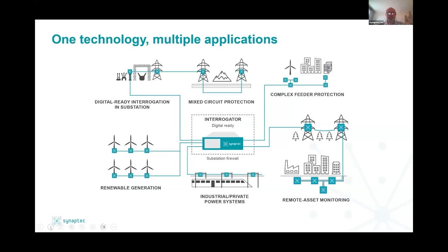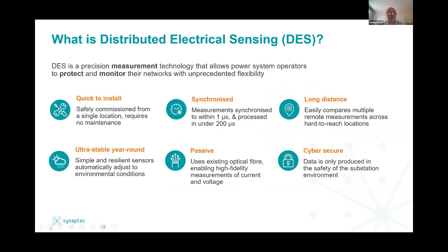Half of our business is about the enhancement of protection and control functions for complex circuits. The other half is about online and permanent condition monitoring of remote but valuable assets critical to generation or continuity of supply. Distributed electrical sensing is fundamentally a precision instrumentation technology where passive sensors can be deployed far from the substation. They are very quick, safe and easy to install, synchronous, and can monitor many different locations simultaneously.